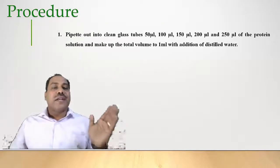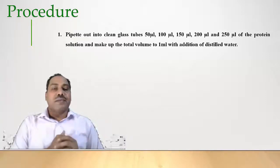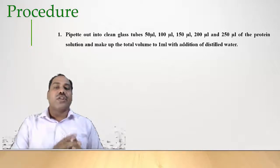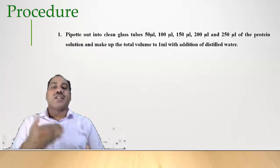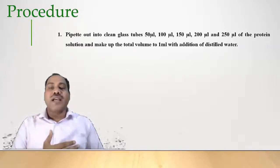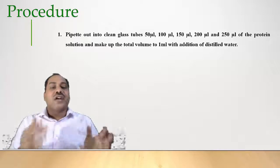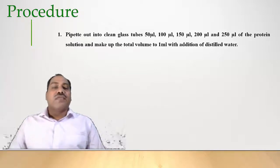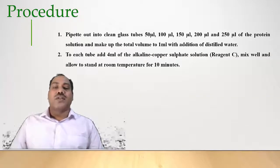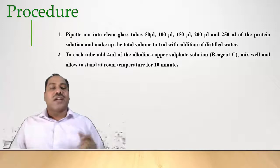The procedure begins by pipetting different concentrations of proteins — 50, 100, 150, 200, and 250 micrograms per ml — into clean glass test tubes, and making the total volume up to 1 ml with distilled water. To each tube, add 4 ml of alkaline copper sulfate solution (reagent C), mix well, and allow to stand at room temperature for 10 minutes.